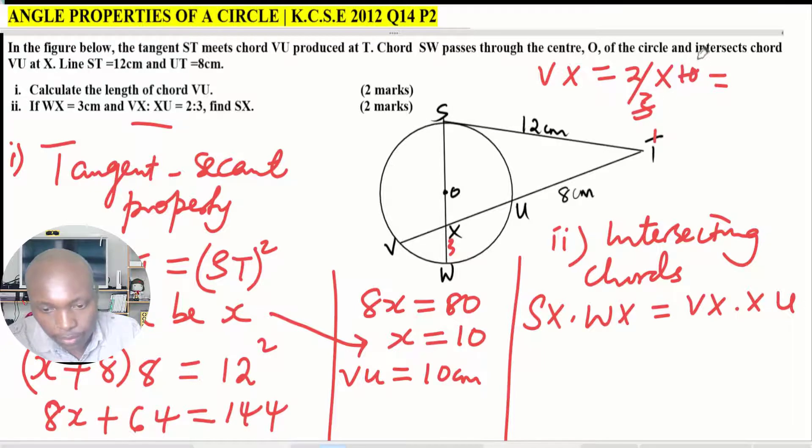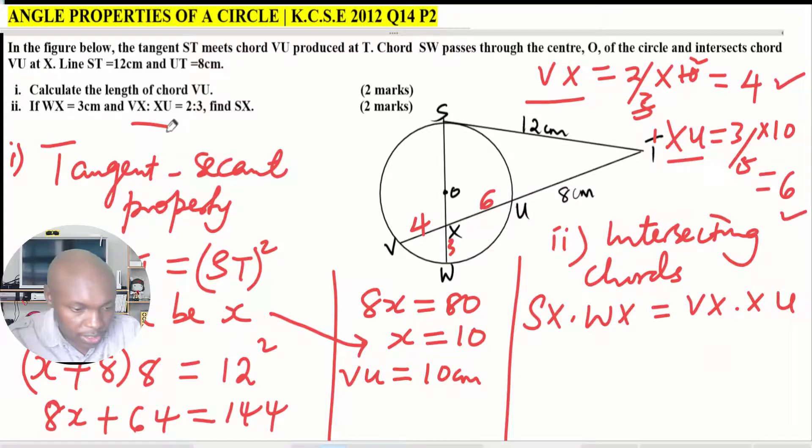To get XU, XU will be 3 over 5 times 10, and this one will give 6. So XU will be 6. You've got VX is 4 and XU is 6. We have used this ratio 2 is to 3 with that length VU.